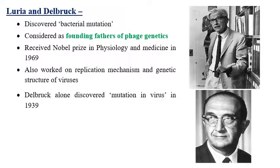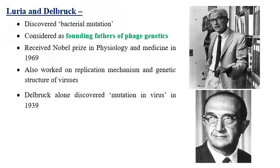Luria and Delbrück together discovered bacterial mutations and are considered the founding fathers of phage genetics. They received the Nobel Prize in Physiology and Medicine in 1969. They worked on replication mechanisms and the genetic structure of viruses. Delbrück alone also discovered mutations in plant viruses in 1939.